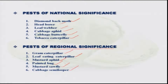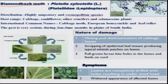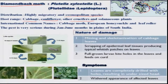Now let us understand the nature of damage of these pests. The diamondback moth is cosmopolitan in nature and widely distributed. If you look at the global map and the distribution pattern of this pest, you will understand the nature of its distribution. It attacks not only cabbage but also cauliflower and other cruciferous as well as solanaceous plants, though more seriously on cabbage and cauliflower.